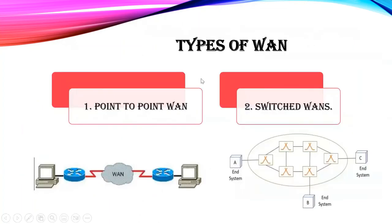WAN is divided into two types: point-to-point WAN and switched WAN. In point-to-point WAN, two communication devices are connected through some transmission medium. In switched WAN, more than two nodes are involved, and several point-to-point WANs connected together form a switched WAN.